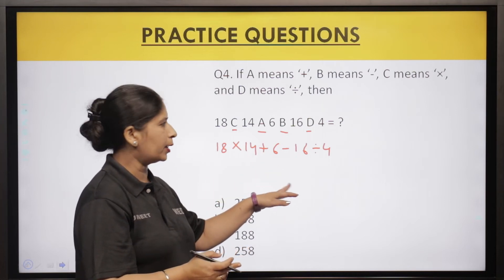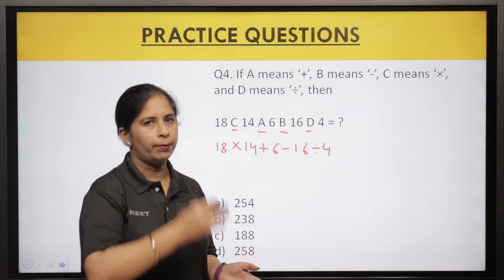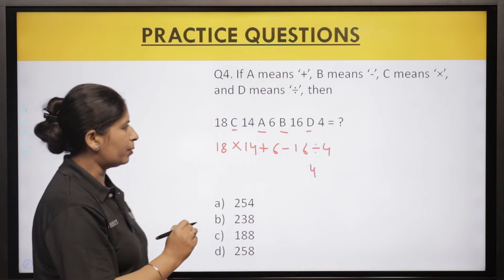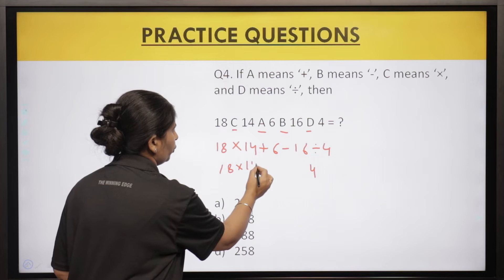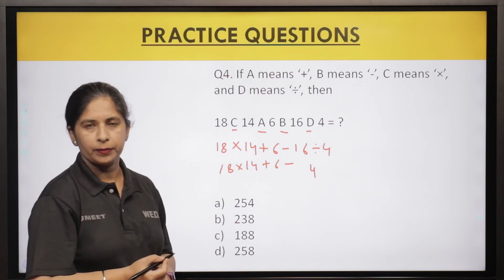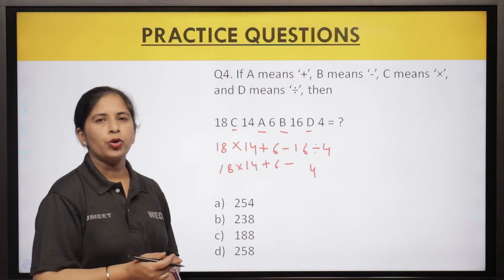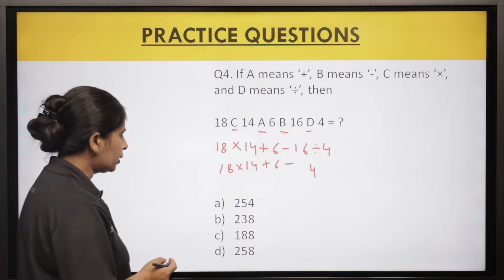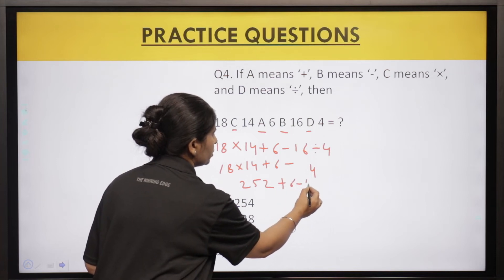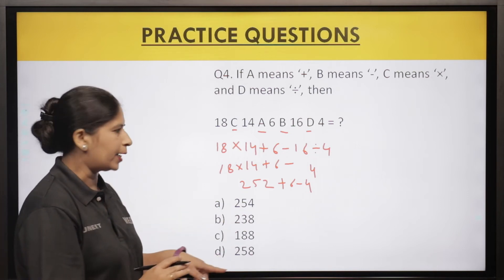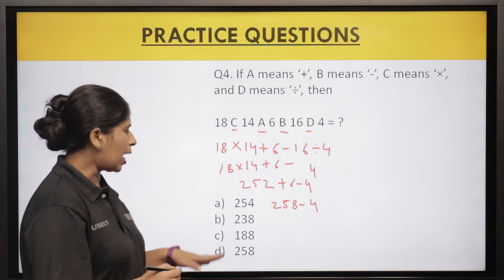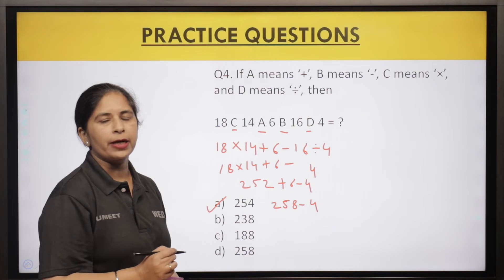Next step: multiplication — 18 × 14 = 252. Then: 252 + 6 − 4. Addition: 252 + 6 = 258. Then subtraction: 258 − 4 = 254. So your correct answer is A, that is 254. Kitne bachon ko correct answer hai A — tell me in the comment section.